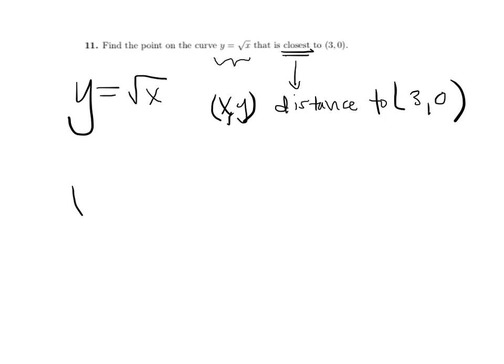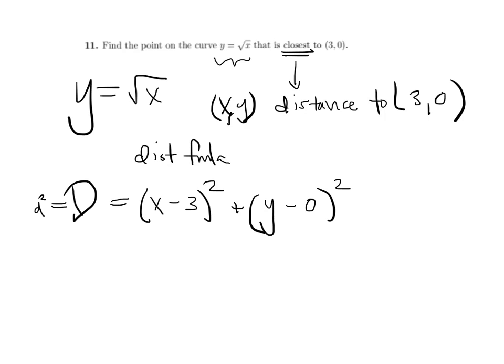will satisfy the equation capital D, which is what I'm using for the distance squared: (x minus 3) squared plus (y minus 0) squared. This is the distance formula, or in reality, the Pythagorean theorem.